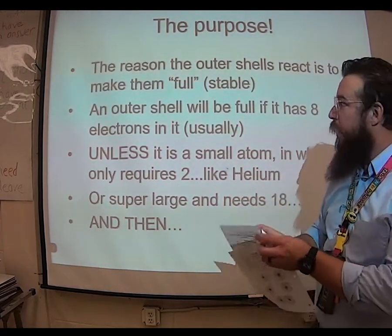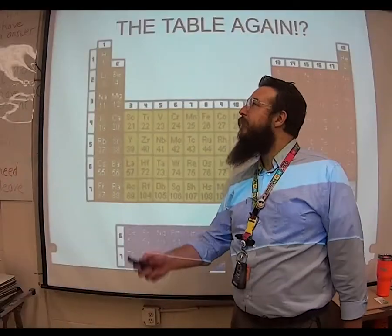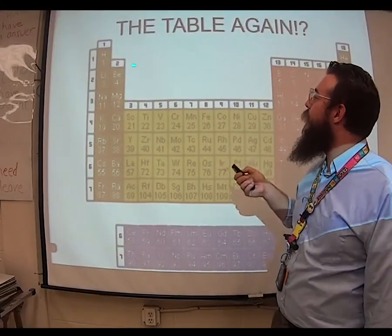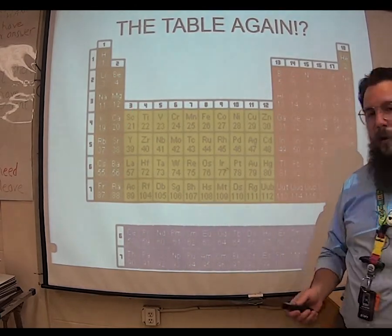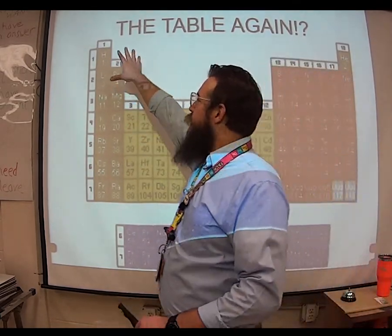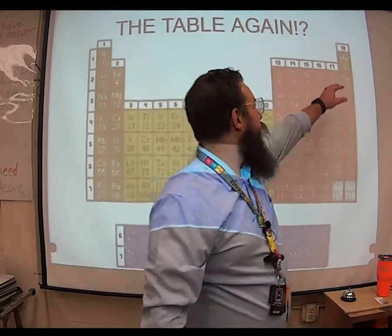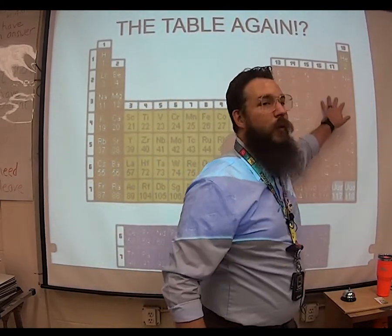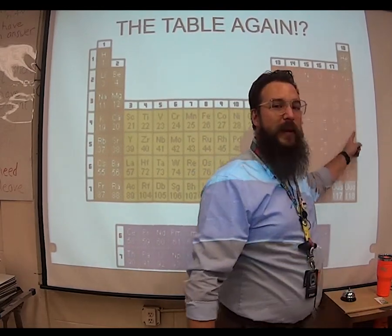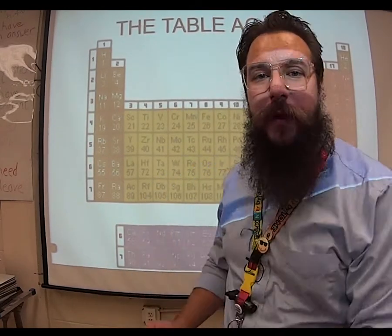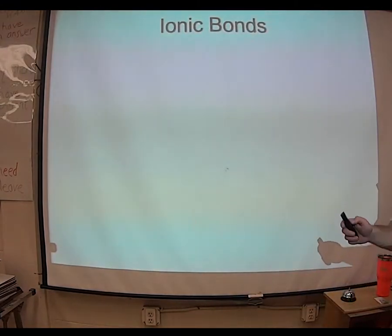Now we're going to discuss types of bonds. To discuss the types of bonds, you will need your periodic table — as always, the periodic table. Today we're going to talk about what happens with things from this side of the periodic table getting together with things from this side of the periodic table. Notice I didn't say this side because those are the noble gases, and they don't form any bonds. So: ionic bonds.